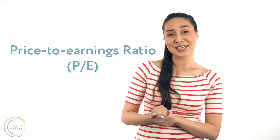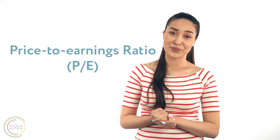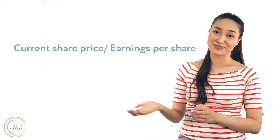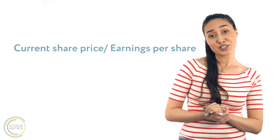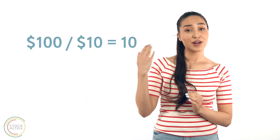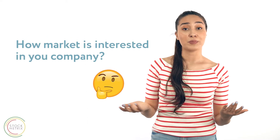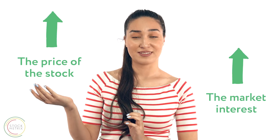The first one is the PE ratio, which stands for price-to-earnings ratio. It describes the relationship between a company's stock price and its earnings. The equation is the current share price divided by the earnings per share. For example, if your current share price is $100 and your earnings per share over the last 10 months is $10, then 100 divided by 10 equals 10. This ratio describes how interested the market is in your company, because some companies might have the same earnings but trade at different prices. The higher the stock price, the more interested the market is, and vice versa.